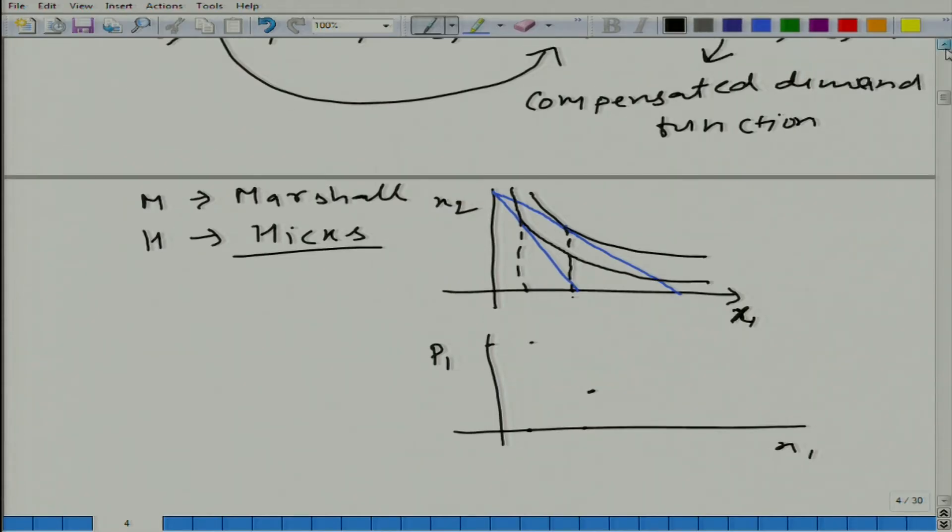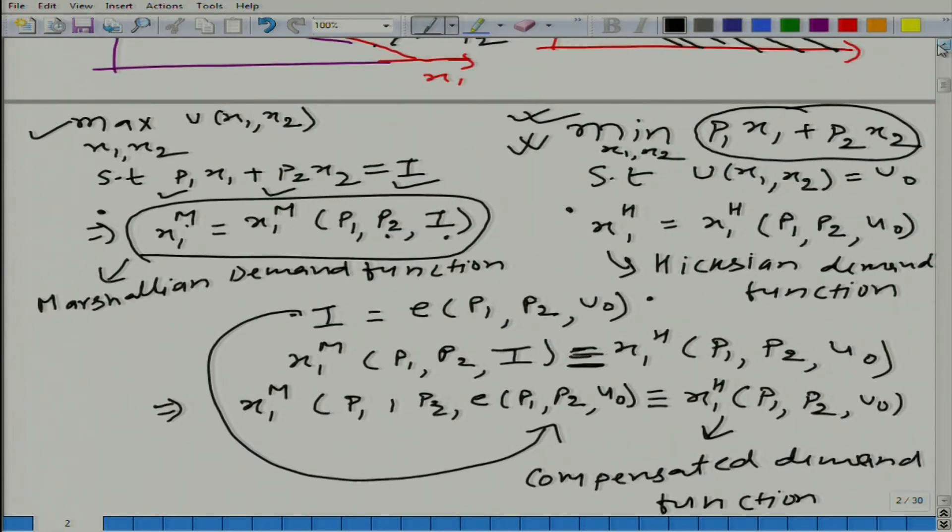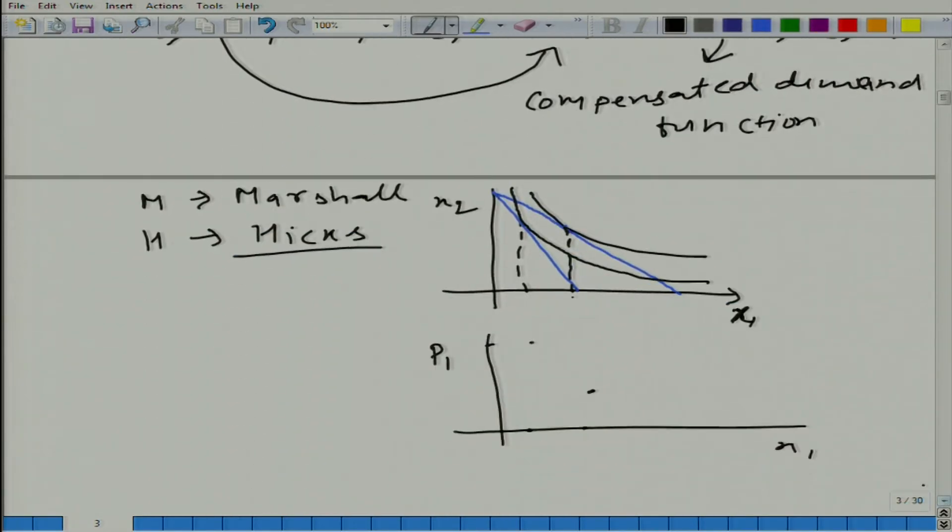But what are we literally doing? Literally we are taking this problem and we are changing here this p1, that is why budget line is changing and we are obtaining the optimal bundle. And in optimal bundle, we have optimal quantity of good 1 and that is what we are tracing here in the demand function.